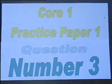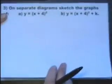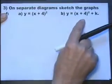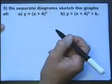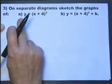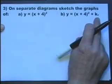Core one practice paper one, question number three. In this we have the whole question the same as on your question paper: on separate diagrams sketch the graphs of this, and on a separate graph that. So let's look.